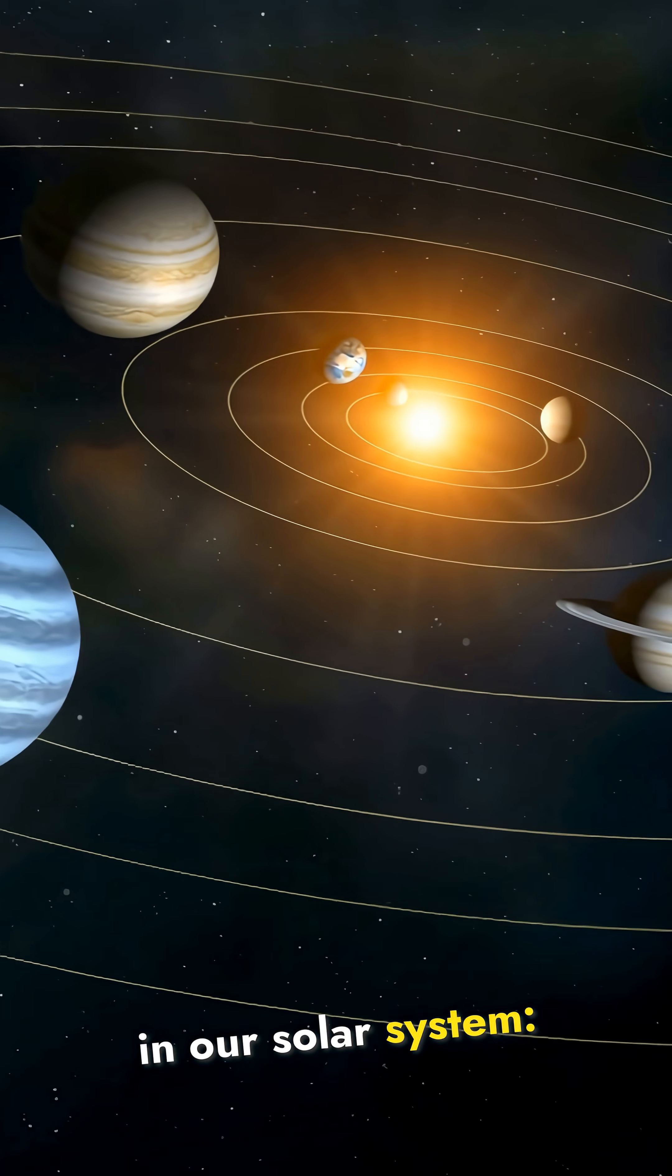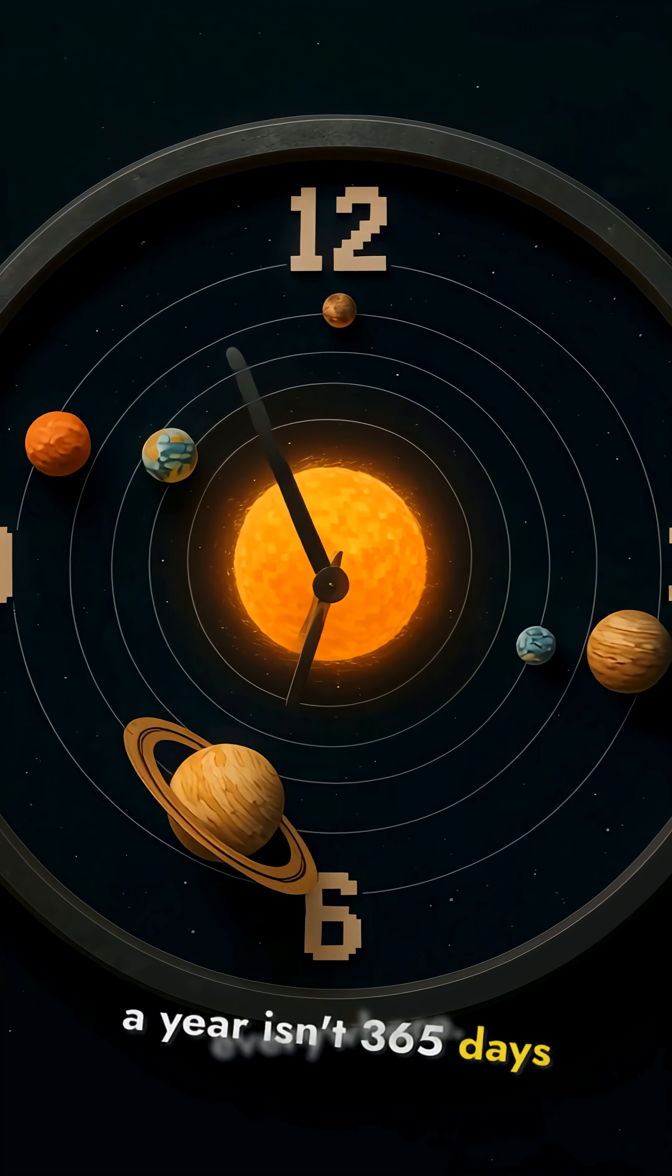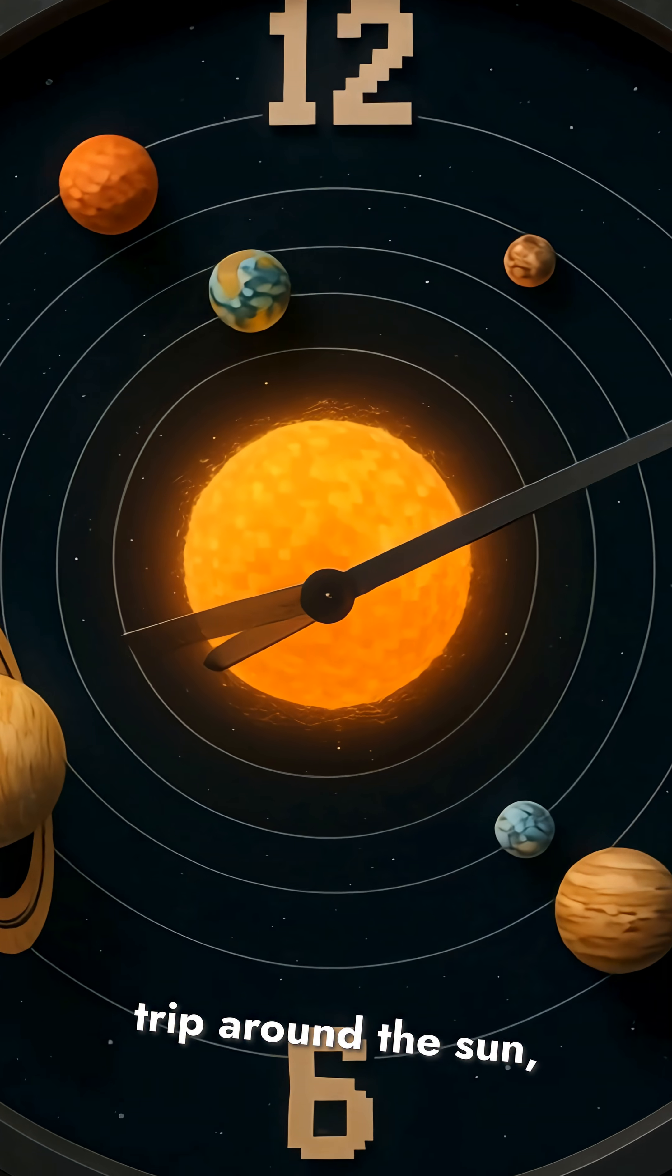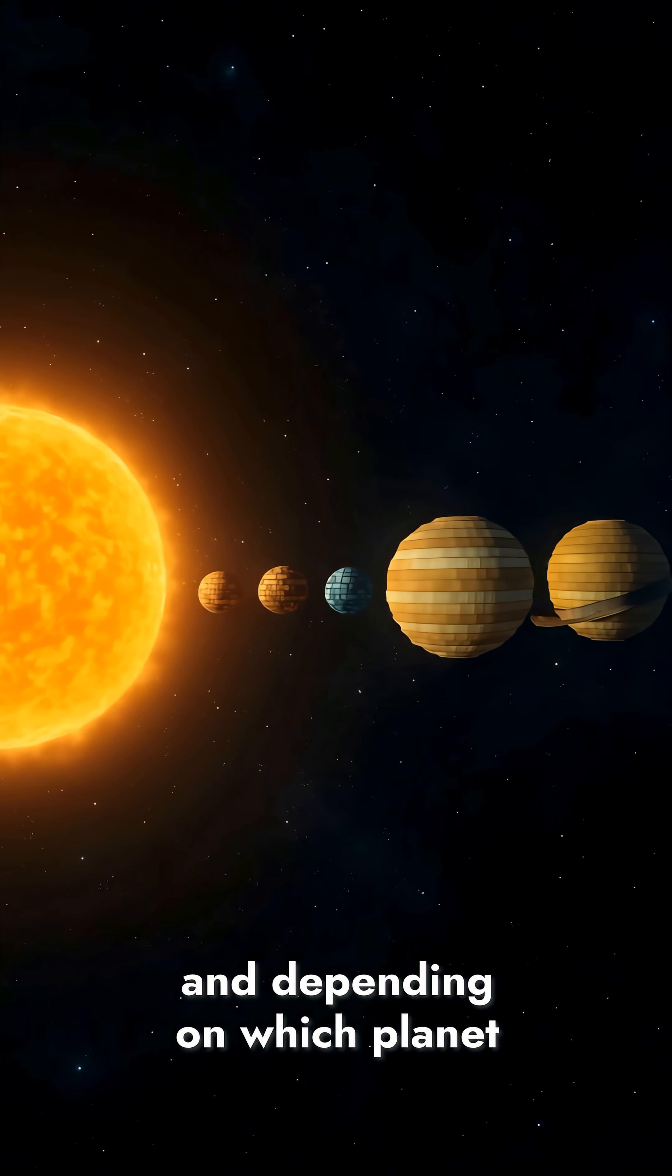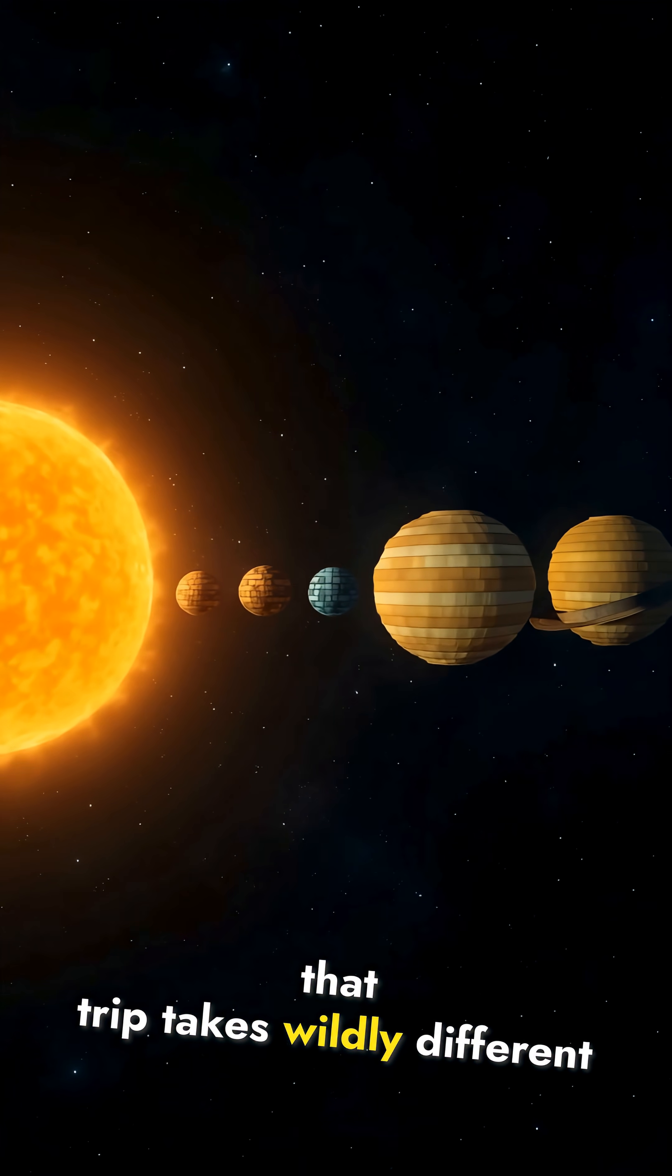Here's the thing about time in our solar system. A year isn't 365 days everywhere. A year is just one complete trip around the sun, and depending on which planet you're standing on, that trip takes wildly different amounts of time.